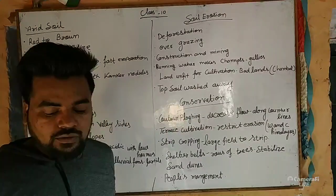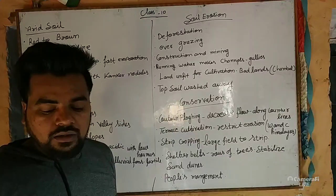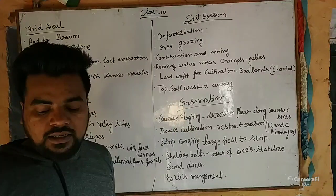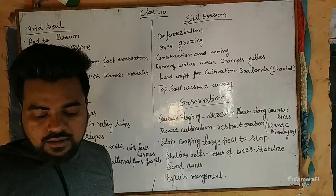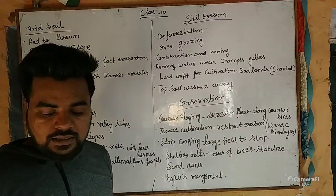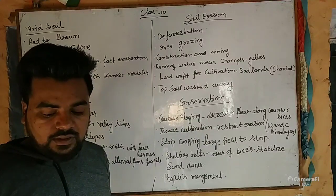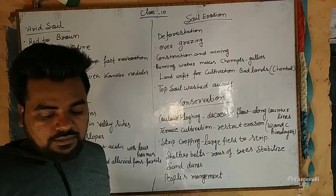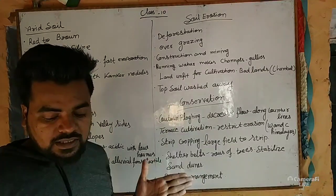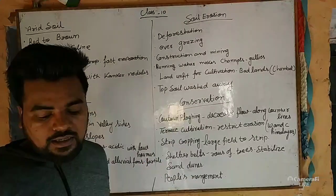The lower horizon of the soil is occupied by kankar nodules, because calcium content increases downward. As we go deeper, we get kankar nodules.